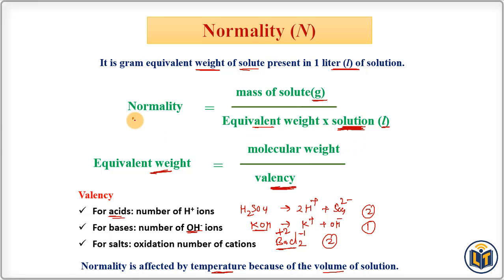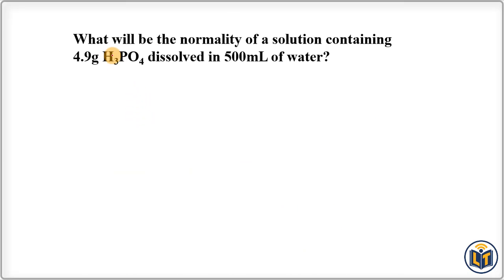The problem says: What will be the normality of a solution containing 4.9 gram phosphoric acid dissolved in 500 mL of water?